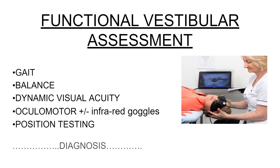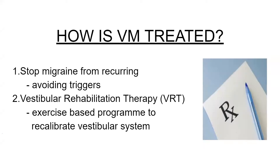There's then an oculomotor assessment looking at eye movements — about 10 different tests — done by observing the eyes directly but also using infrared goggles shown on the slide. The goggles take away fixation so the patient is in complete darkness, but the clinician can see their eyes on a screen. Taking away fixation allows homing in on the vestibular system more accurately. Finally, positional testing is always done to rule out other pathologies — predominantly inner ear conditions — that would cause vestibular symptoms like vertigo. This rules out everything else so you can be more comfortable confirming the vestibular migraine diagnosis.